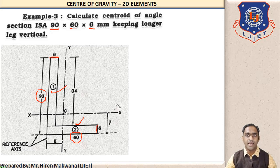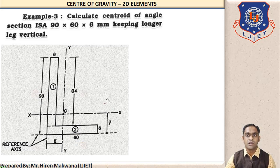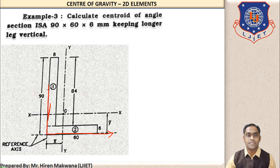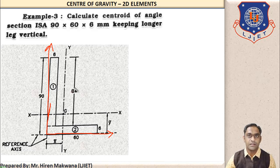For the calculations we have to draw the x and y axes first. The x axis is drawn from the bottom of the figure and the y axis is drawn from the extreme left side of the rectangle. So there are two parts: rectangle 1 and rectangle 2. Now let us check the calculations.